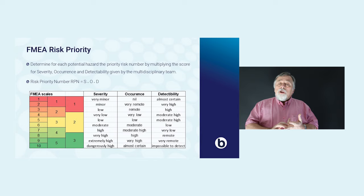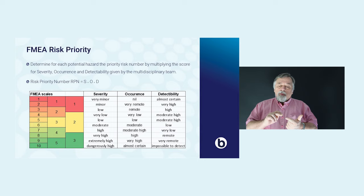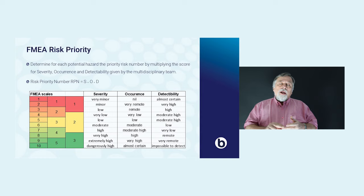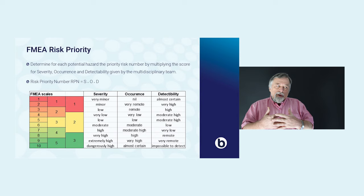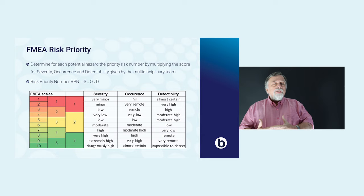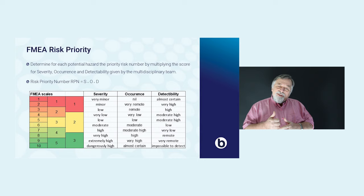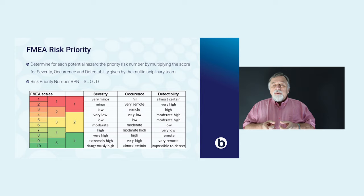You have to agree together which scale you use. For instance, one to five. Sometimes the scale used for detectability is one step lower — for instance, one to three for detectability, and one to five for occurrence and severity. In this graph, severity ranges from very minor to moderately to dangerously high; occurrence from nil to low, moderate, to almost certain; and for detectability, from almost certain to very high, moderate, to impossible to detect. Detectability works the other way around: it's good when you can detect it and not good when you cannot. That way you create three numbers, multiply them, and that gives you a risk priority number. In this example the highest you can get is 3 × 5 × 5 = 75.